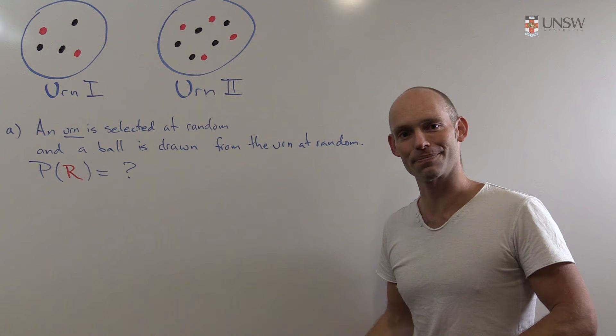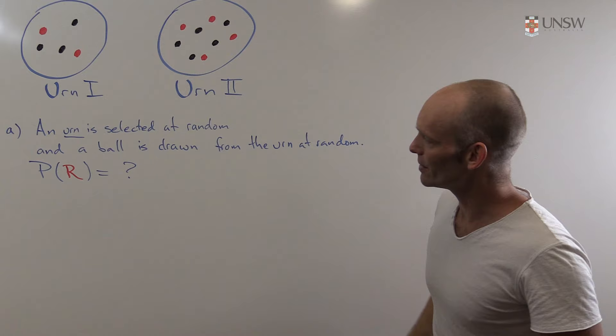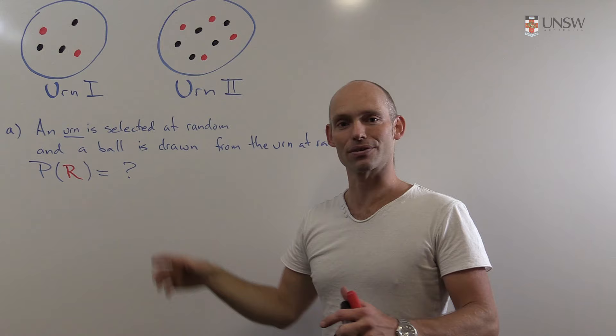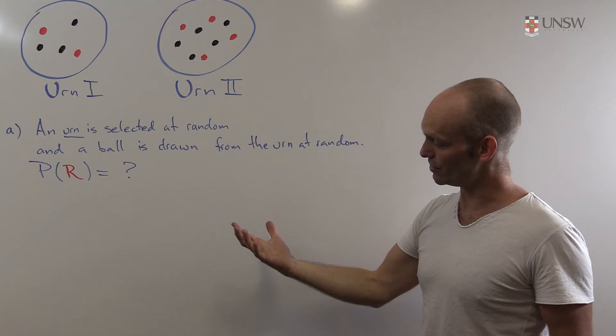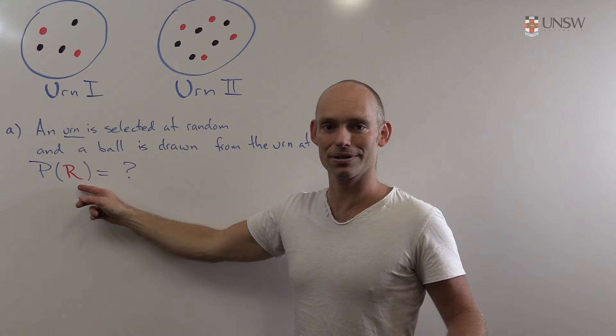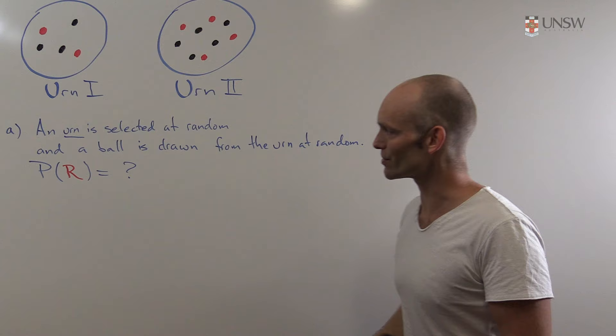Here we have two urns, and we first select one of them at random — so a 50% chance of selecting either one. Once we've selected the urn, we reach into it blindly and grab a ball and look at its color. The question is: what's the probability that the ball we now have in our hand is red?